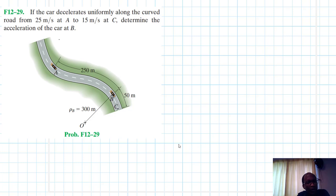Welcome to this screencaster problem. The problem reads: if the car decelerates uniformly along a curved road from 25 meters per second at A to 15 meters per second at C, determine the acceleration of the car at B. This problem is from Engineering Mechanics and Dynamics, 14th edition.